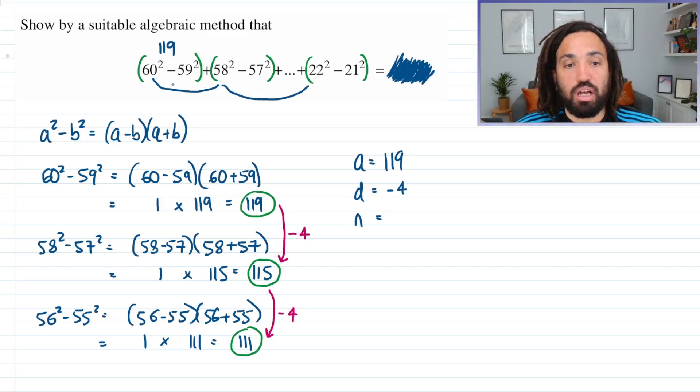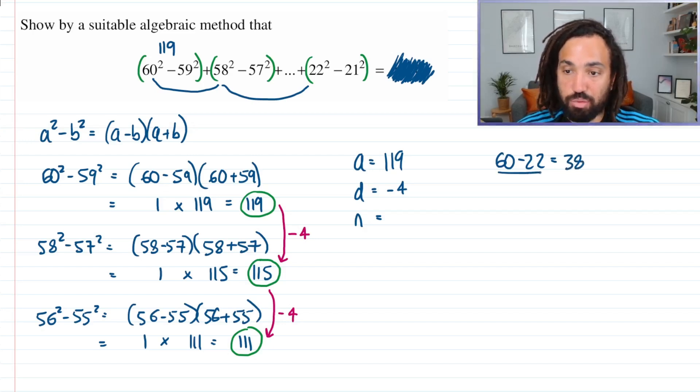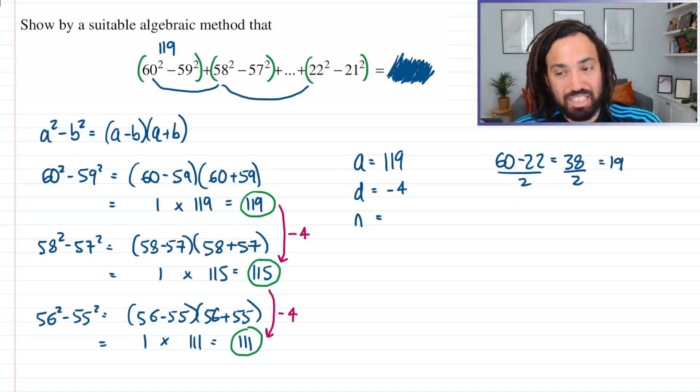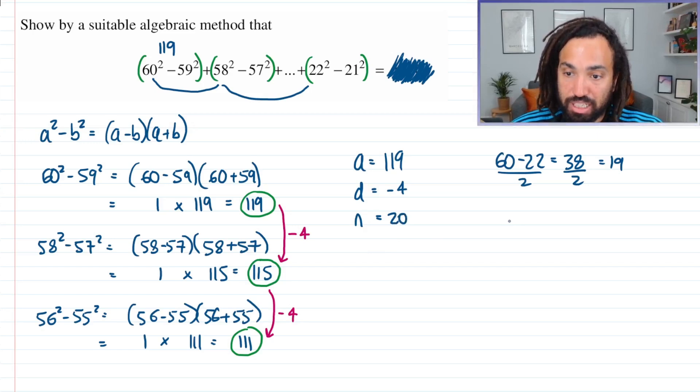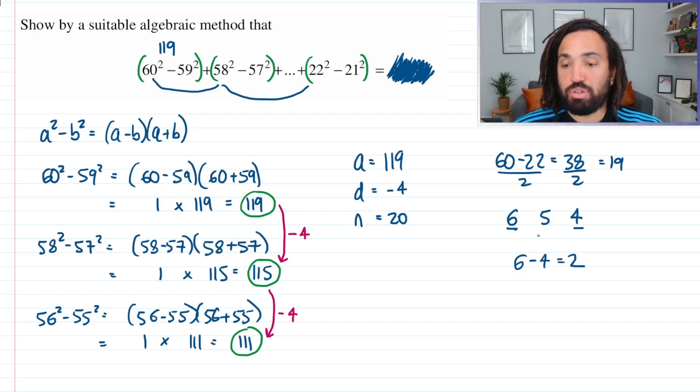And if we were to do 60 - 22, that would give us 38, and then if we were to divide that by 2, that would give us 19. So you might think there are 19 terms, but using that method doesn't quite work - you have to add 1 because we are including 60 and 22. So in fact there are 20 terms. For example, if you're trying to count up the number of terms here, you would look at the first term and the last term. You wouldn't just do 6 - 4 = 2 - you'd have to add 1 to it. There are 3 terms here because you're including 6 and 4.